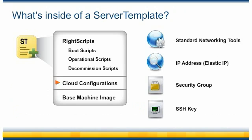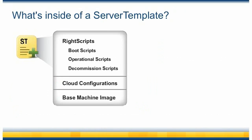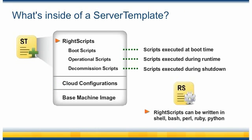Next, you have some standard networking tools. An IP address or elastic IP must be assigned to the server. A security group defines the port-level access to the server, and a unique SSH key is also required to provide root-level access to your machine. And lastly, you have your RightScripts — these are scripts executed at boot time when a server is launched, during normal operational runtime, or during the shutdown phase when an instance is terminated.